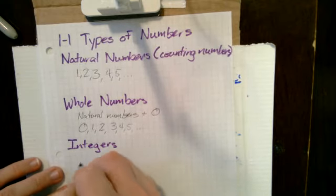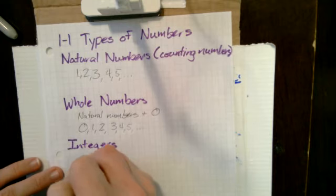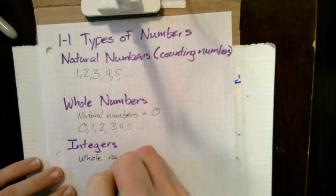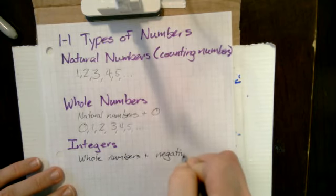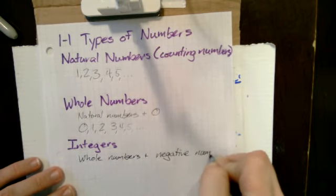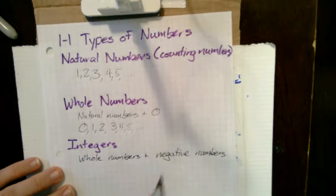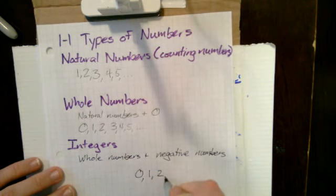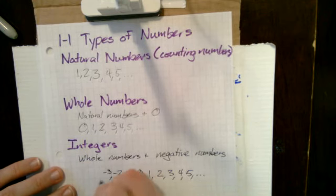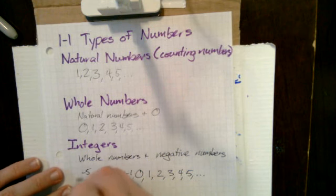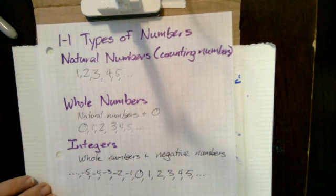Then we've got the integers. The integers are the whole numbers plus the negative numbers. So we do have 0, and 1, 2, 3, 4, 5, and all of the other whole and natural numbers. But we also have negative 1, negative 2, negative 3, negative 4, and negative 5, and those go all the way back to negative infinity.